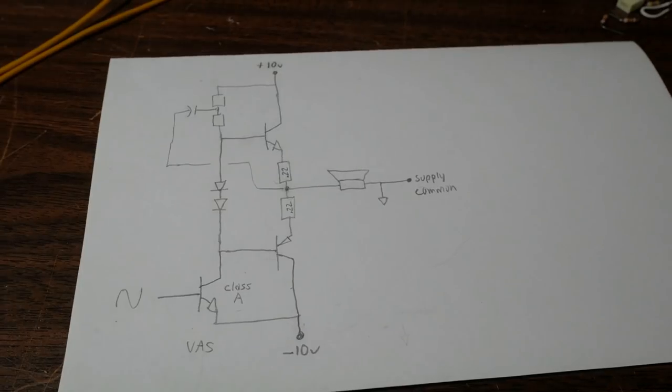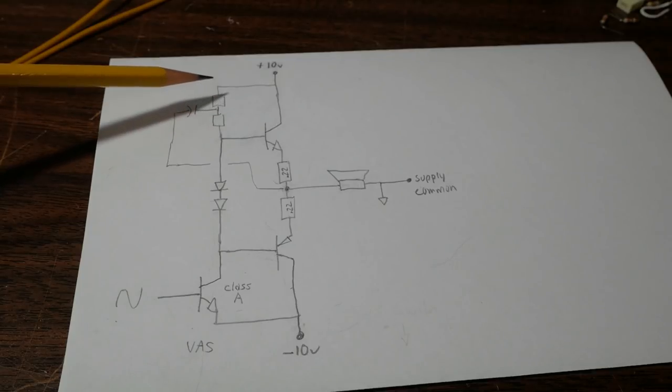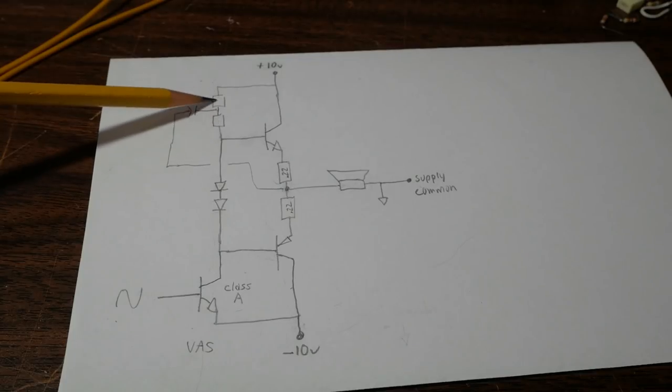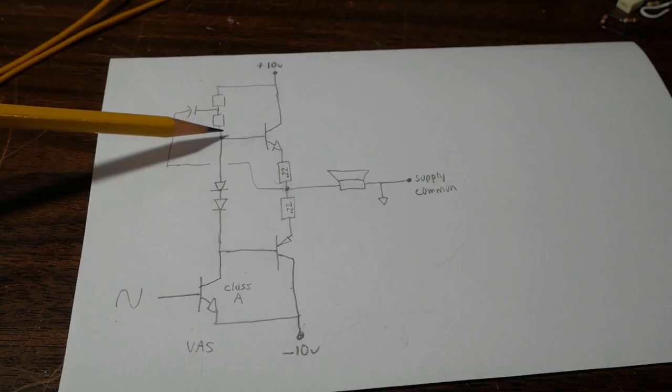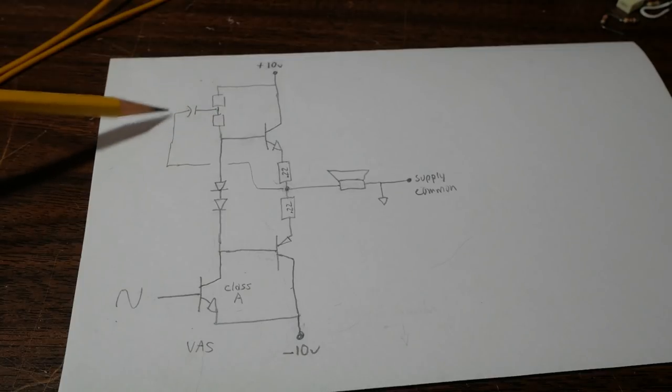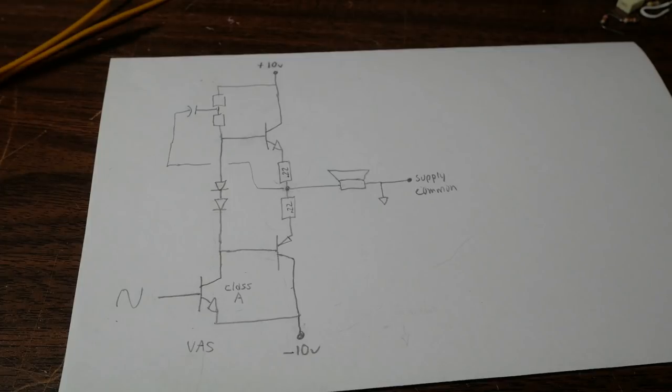So let me redraw a bootstrap circuit here. Okay, so now I added a bootstrap circuit. Whatever resistor value I had before, I took that out and put two resistors in of half the value. So the total equals the same value I had before. And then I took a capacitor here, connected it in the middle, and the other side is connected to the output. Now let's see how this works.